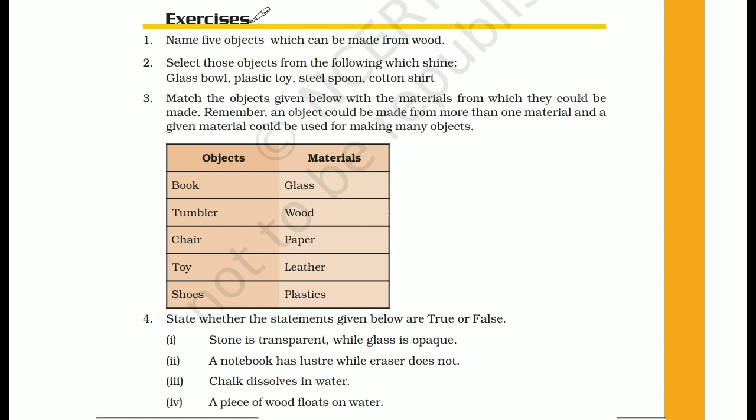Remember that one object can be made from more than one material, or one material can be used to make more than one object. For example, a book is made of paper; a tumbler can be made of glass, wood, or plastic. A chair can be made of wood or plastic. A toy can be made of glass.